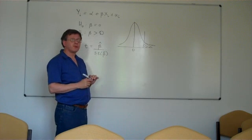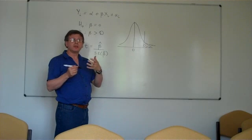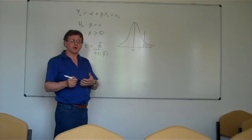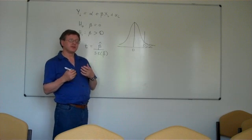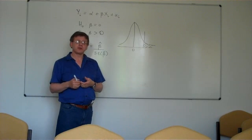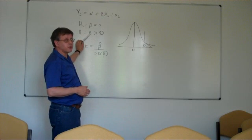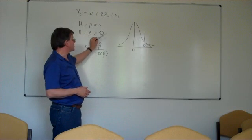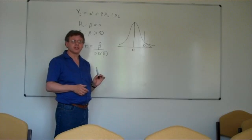So in summary, whenever we're asked to choose between doing a one-tail test and a two-tail test, we look at the nature of the alternative hypothesis. If the alternative hypothesis is simply that the coefficient is not equal to zero, we use a two-tail test. If the alternative is that the coefficient is either greater than zero or indeed less than zero, we would use a one-tail test.